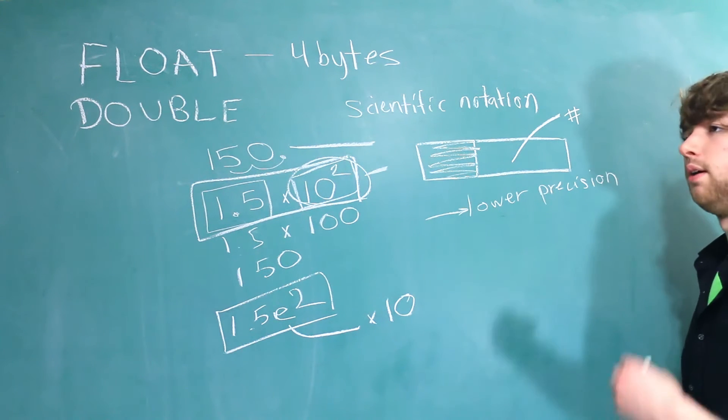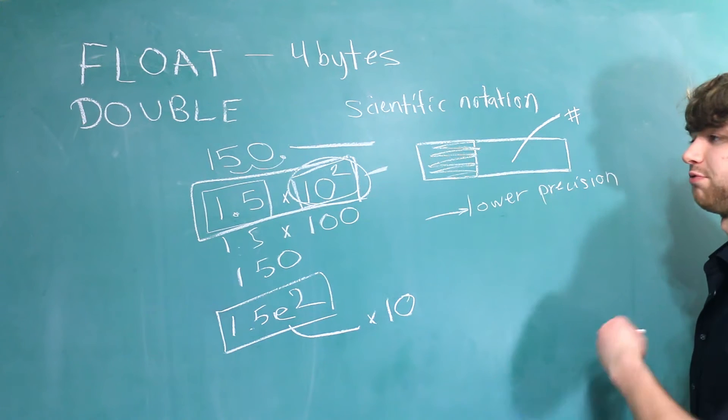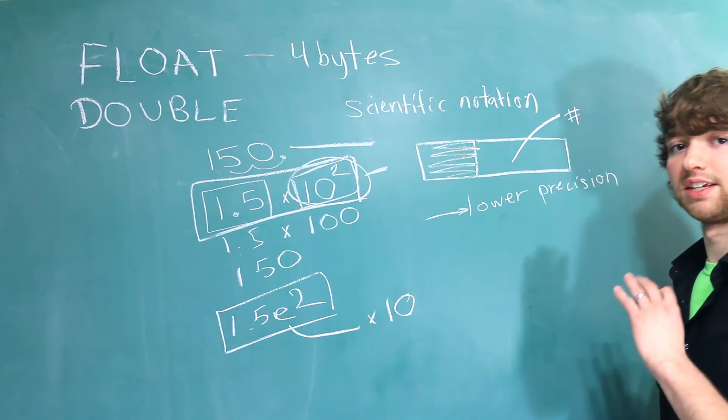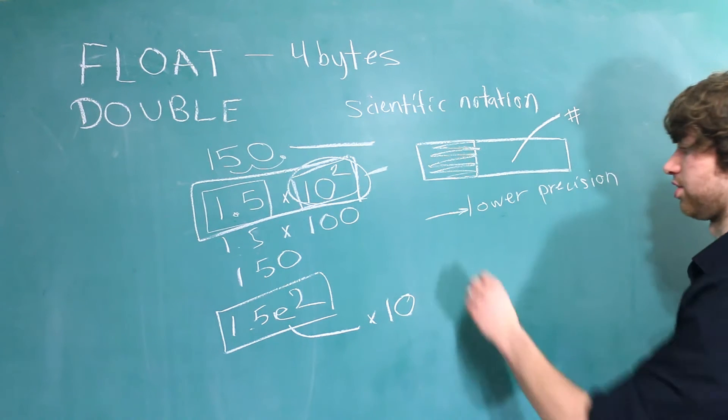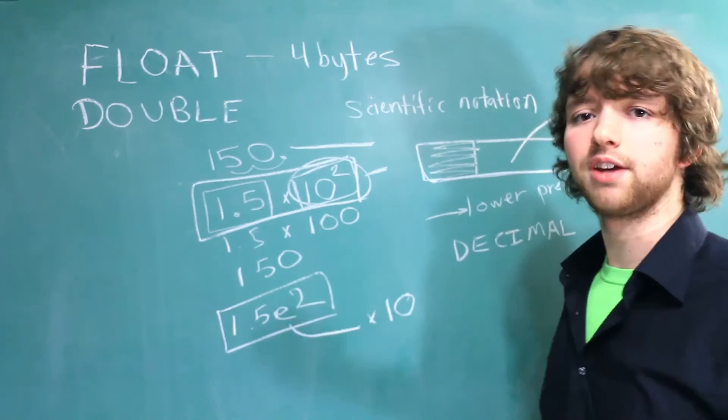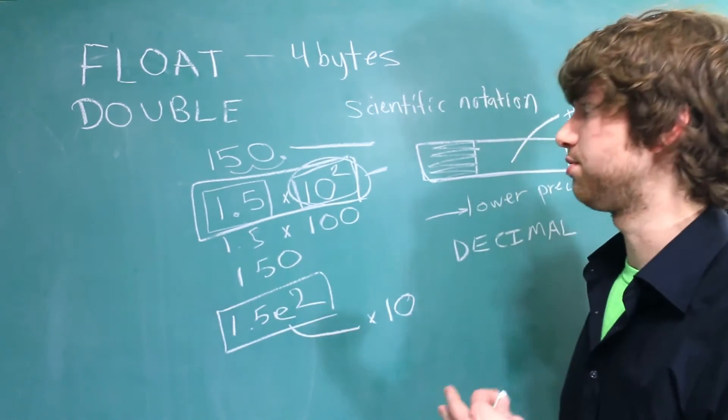Lower precision than what? I guess it would be lower precision than if we stored the entire number as an exact value, such as using the decimal data type. Now you have to ask yourself a question, should I use this data type?